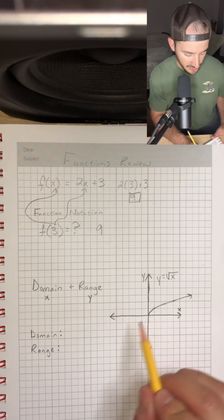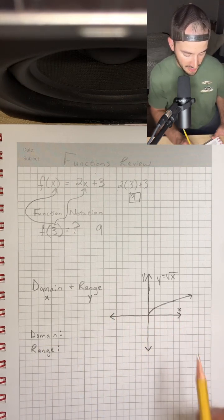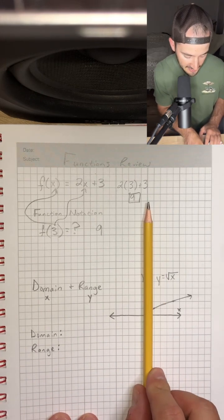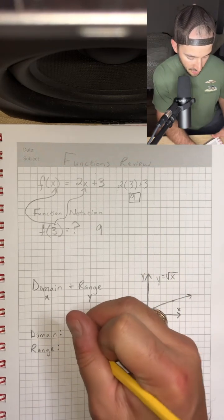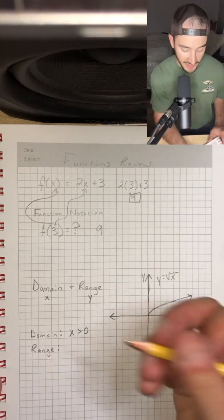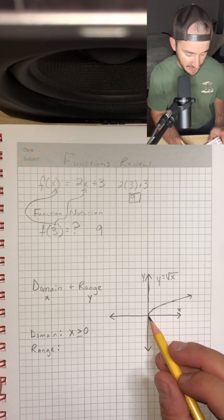So let's start with domain. Domain is all the x values, so on a graph, that's looking left and right. So I can see that the graph never goes left of the y-axis, or 0, but it does continue to the right. So I'm thinking the domain is going to be x is greater than 0, and it's actually going to be x is greater than or equal to 0, because there is a point at 0.